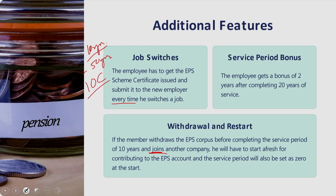Regarding total disablement: a member of EPFO who becomes disabled totally and permanently is entitled to a monthly pension irrespective of whether he has completed the pensionable service period. The employer has to deposit funds in the EPS account for at least one month for eligibility. The member becomes eligible for monthly pension from the date of permanent disablement, payable for the entire lifetime, though the member may have to undergo a medical examination to confirm unfitness for the job he was doing before becoming disabled.